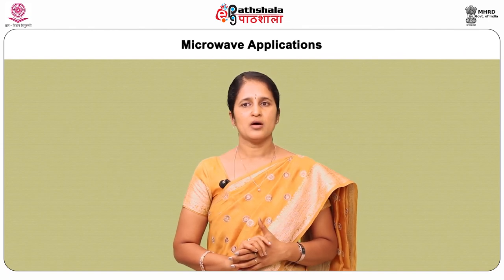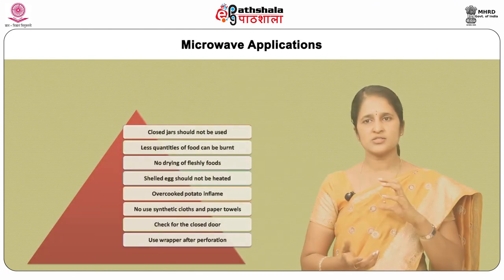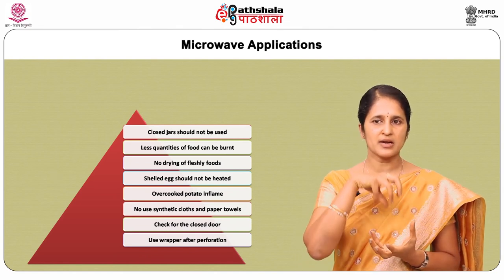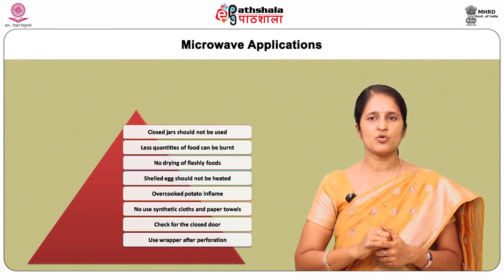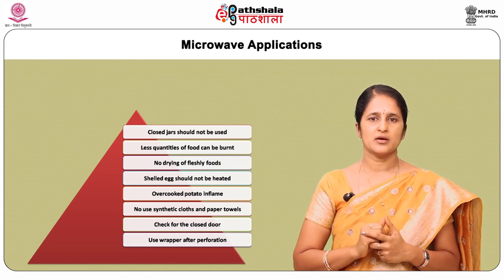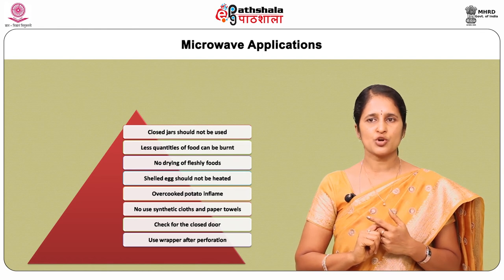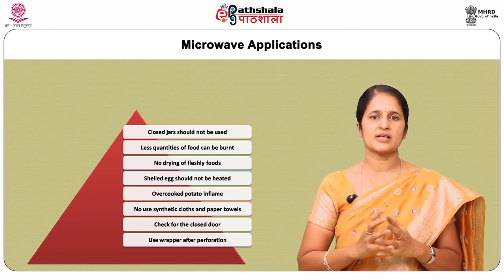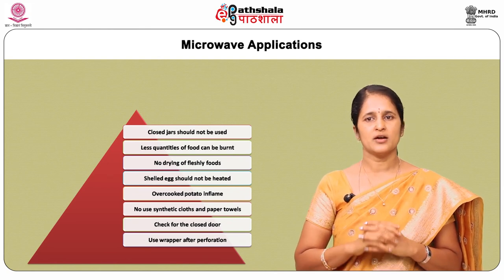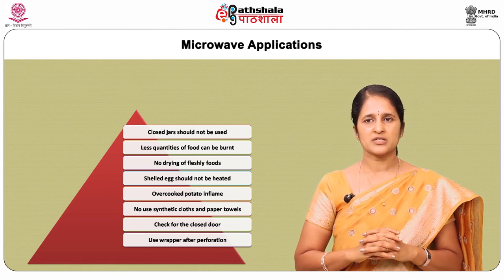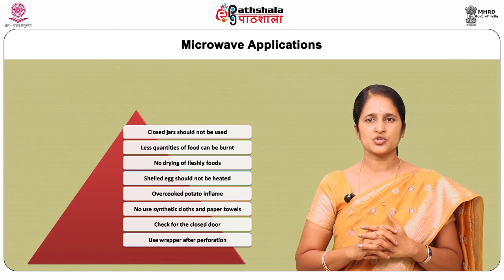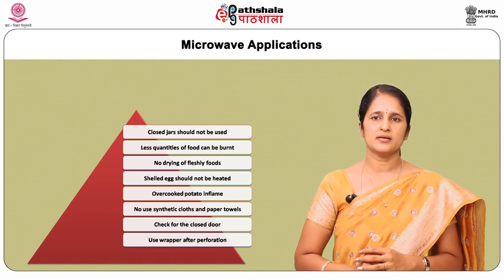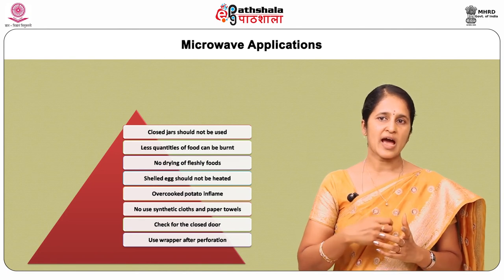Practical hints to be followed when using a microwave: closed jars should not be used because they may explode due to excessive pressure built up inside. Less quantity of food can burn due to little moisture content. Meat, herbs, vegetables and fruits should not be dried in the microwave. Eggs should not be heated with the shell because they may burst due to excessive pressure. Overcooking of potatoes can cause them to catch fire after drying. Paper towels or cloths with synthetic fiber should not be used as they may ignite. Check whether the microwave oven door is closed properly, and if a wrapper is used, perforate it before use.